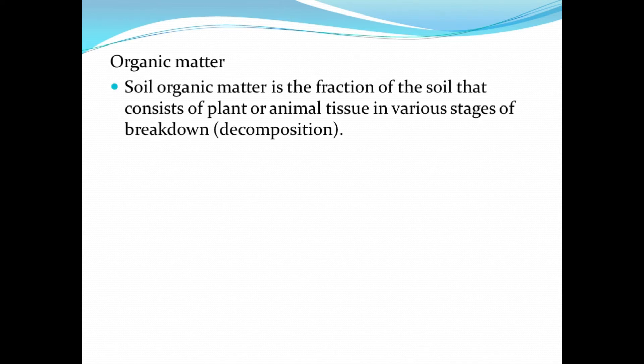Let's take a look at the next soil constituent, which is soil organic matter. Soil organic matter is the fraction of the soil that consists of plant or animal tissue in various stages of decomposition. So organic matter includes anything that comes from plants and animals that is in the soil, whether living or non-living and at different stages of decomposition.